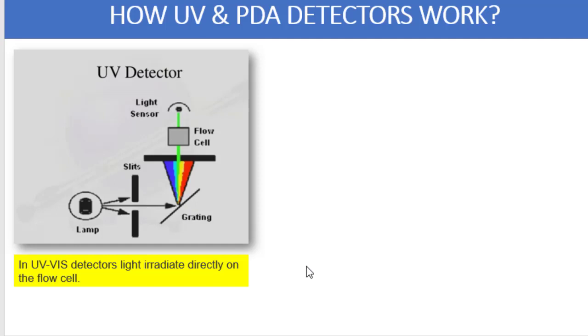The flow cell is the compartment through which either mobile phase or the sample gets transferred. When the sample enters into the flow cell it can absorb the light which is falling onto it. Whatever light absorbed will be measured by the light sensor or the detector.